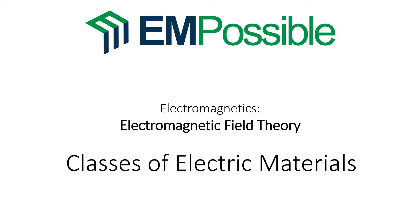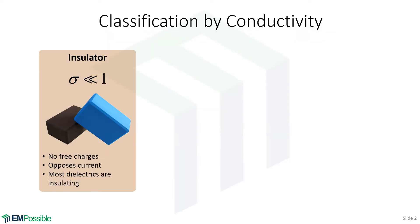Classes of electric materials. When it comes to electric materials, we tend to classify them by their conductivity. The first class is when they have extremely low conductivity and they are insulating.